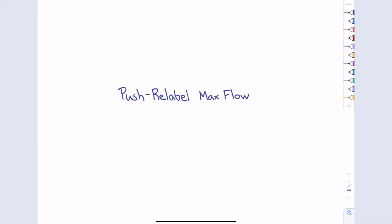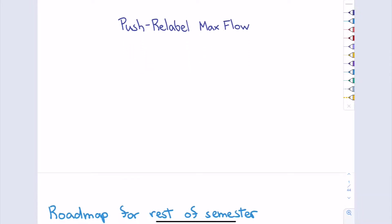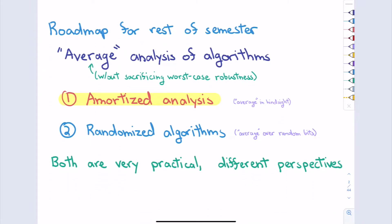Today's lecture is about a family of max flow algorithms called the push-relabel family. Just to remind us, the last segment of class is doing things slightly different from worst-case running time. We're doing amortized analysis type stuff this week, and then we'll do some randomized expected value type of stuff next week. So it's not necessarily worst case in the strictest sense, like we did basically everything up to before midterm two.